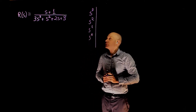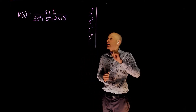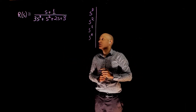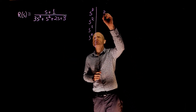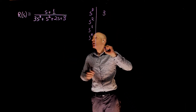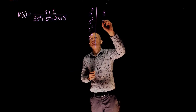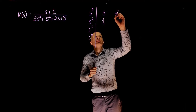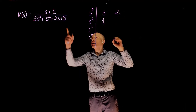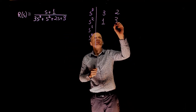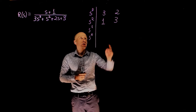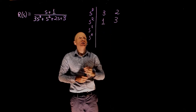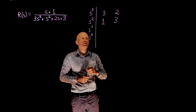We can now input the coefficients in the up-and-down pattern, starting with s to the power of 3, which is 3. S to the power of 2 is 1, s to the power of 1 is 2, and s to the power of 0 is 3. Now that the initial array is set up, we can complete the first column and evaluate the sign of all elements.